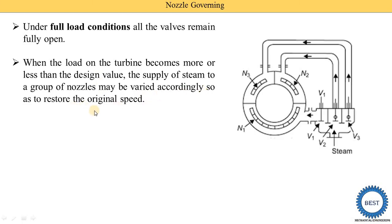To restore the original speed — we already know that we need to run the turbine or generator at a specific speed. When the speed changes, we need to maintain constant speed and restore it. For example, when the speed is reduced to 2900, we need to restore it back to 3000. This restoration of original speed is achieved by controlling the mass flow rate of steam.